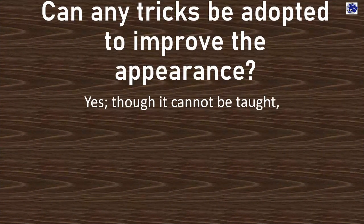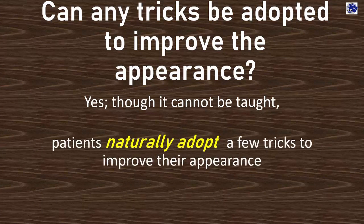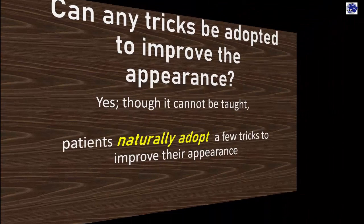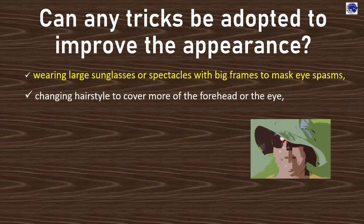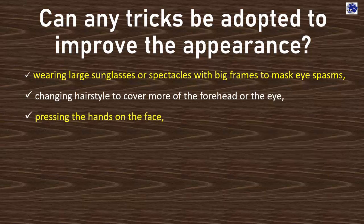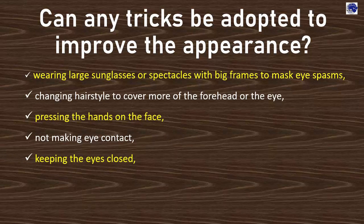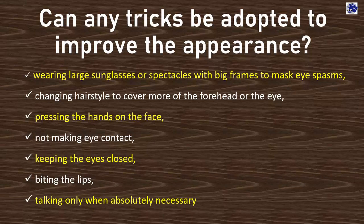Can any tricks be adopted to improve the appearance? Yes, though it cannot be taught, patients naturally adopt a few tricks: wearing large sunglasses or spectacles with big frames to mask eye spasms, changing hairstyle to cover more of the forehead or the eye, pressing the hands on the face, not making eye contact, keeping the eyes closed, biting the lips, and talking only when absolutely necessary.